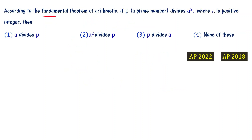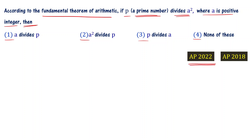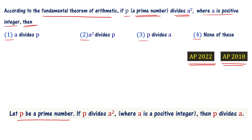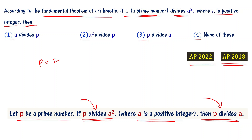According to the fundamental theorem of arithmetic, if P — a prime number — divides a², where a is a positive integer, then which statement is correct? This is from AP policy exam 2022, and a similar question appeared in AP policy 2018. The statement is: let P be a prime number; if P divides a², where a is a positive integer, then P also divides a.